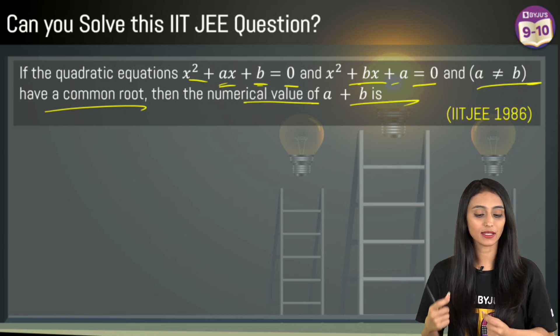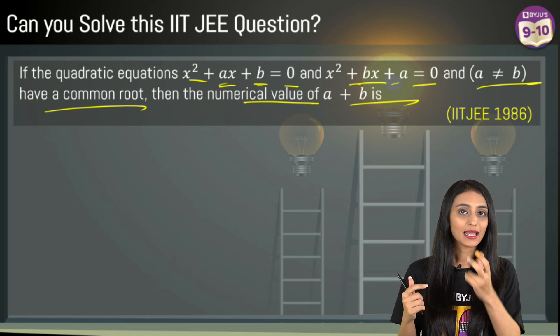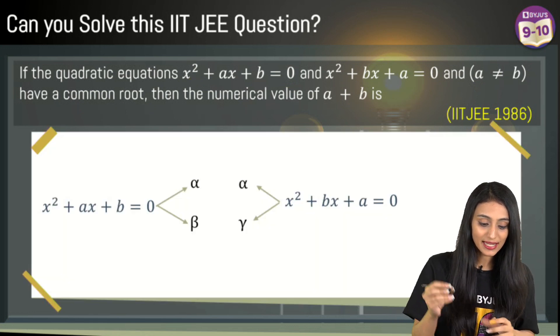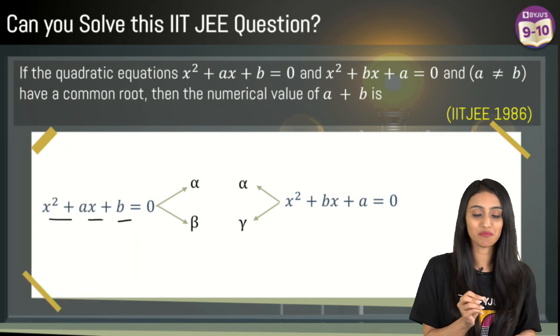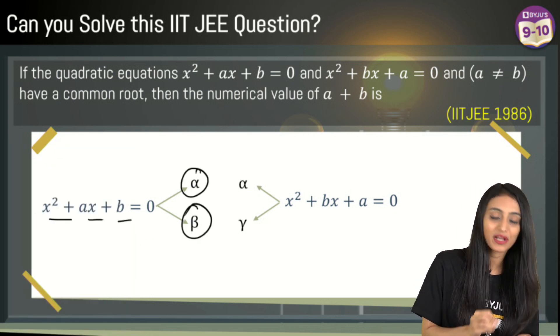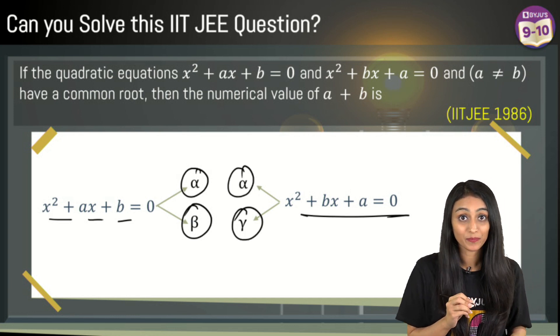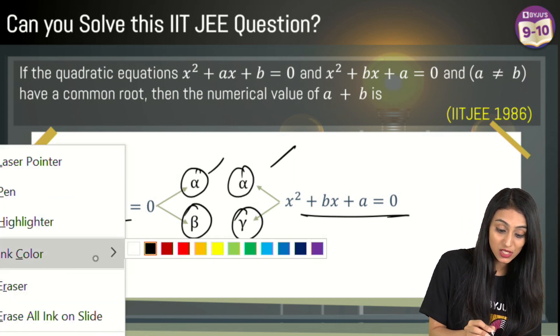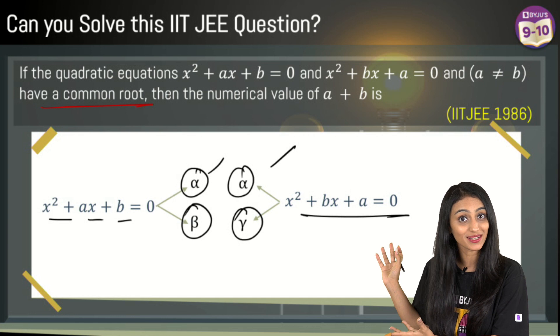Now let's first understand the concept. When we say quadratic equation, we know that they would have two zeros, right? Every quadratic equation would have two zeros. So let's suppose the first quadratic equation that I have here, x² + ax + b = 0, its zeros are α and β. The other one that we have, its zeros are α and γ. Now α is common between both of them. Why? Because the question itself says that they have a common root. So this is the common root, α.